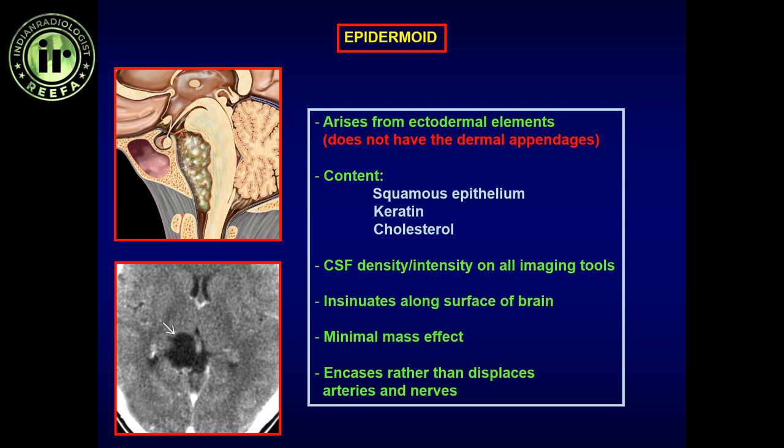Epidermoid can also be an acquired entity, where related to prior surgery or trauma, ectoderm gets included and causes epidermoid formation. Histologically it is identical to what we see in cholesteatoma. This can happen anywhere along the entire neural axis wherever neural tube closure occurs — dorsal to the spinal cord or within the intracranial portion.